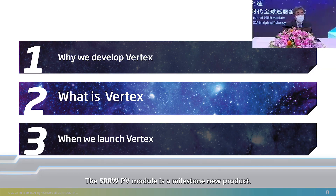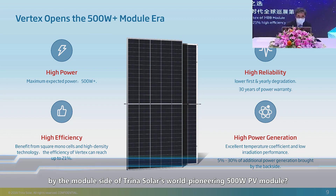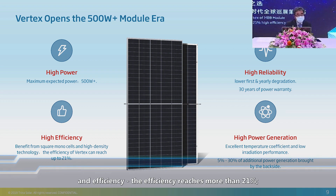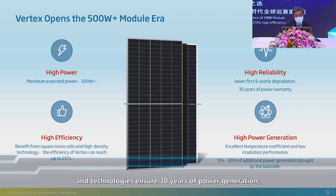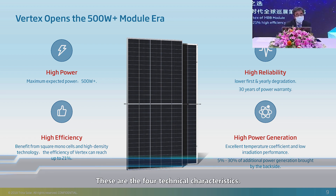The 500-watt PV module is a milestone new product. What are the key technologies employed by Trina Solar's world-pioneering 500-watt PV module? Compared with existing products, the 500-watt module demonstrates higher power and efficiency — reaching more than 21%. It also offers higher reliability, with more reliable materials and technologies ensuring 30 years of power generation, higher power generation capacity, and a low-temperature coefficient. These are the four technical characteristics.